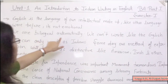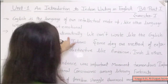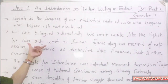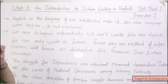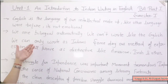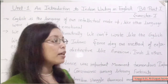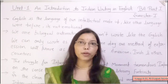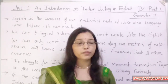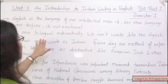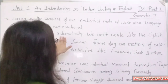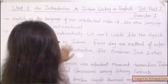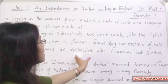We are bilingual automatically. Bilingual means double language — knowing two languages. Normally we have knowledge of both English and Hindi. We are bilingual automatically. We cannot write like the English; we can only write as Indians.